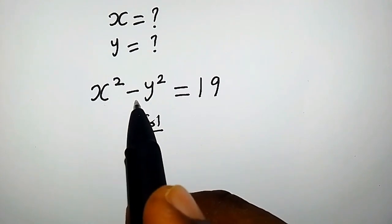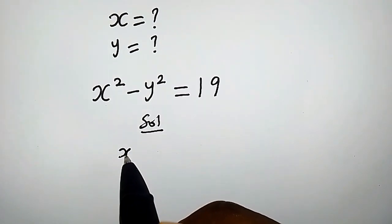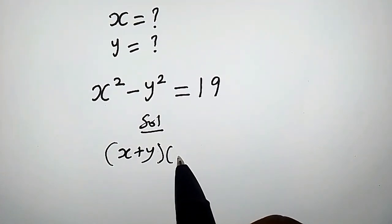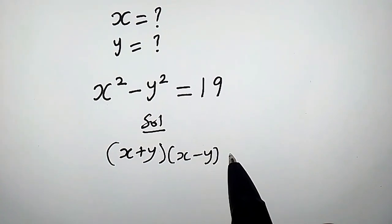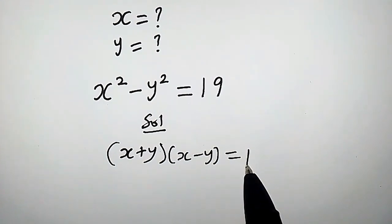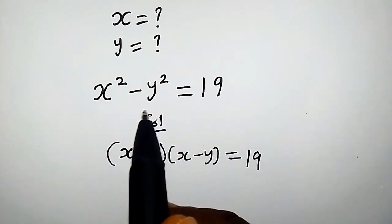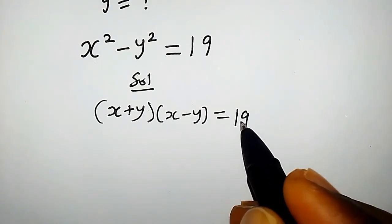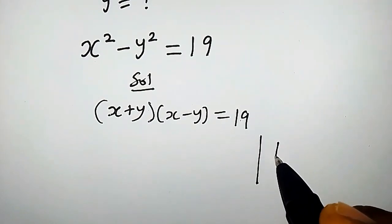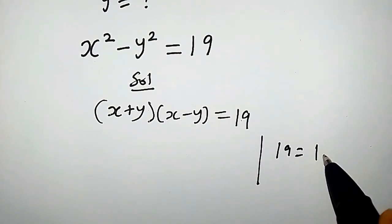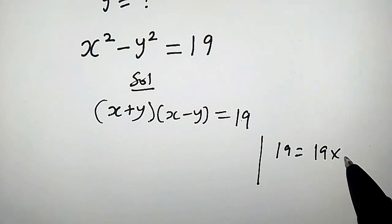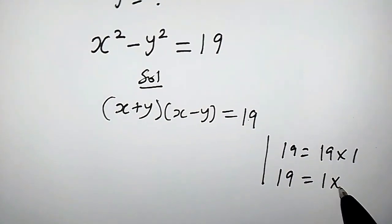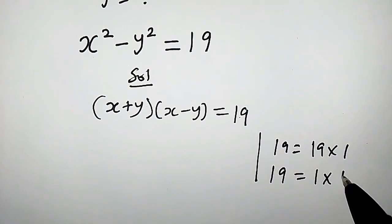x squared minus y squared can be written as (x plus y) times (x minus y) equals 19. This is just the difference of two squares. Now let's consider 19. We can write 19 as 19 times 1, or we can write 19 as 1 times 19.